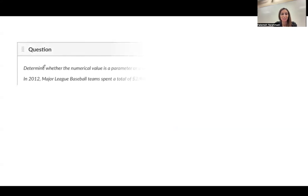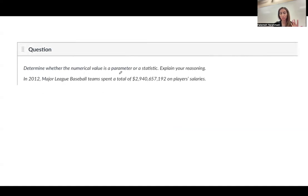Let's take a look at the next question. In the next question, we have determined whether the numerical value is a parameter, which is related to population, or is a statistic, which is related to sample. In 2012, Major League Baseball teams spent a total of about $3 trillion on players' salaries. So, a total of, right? This is a keyword for you, everyone.